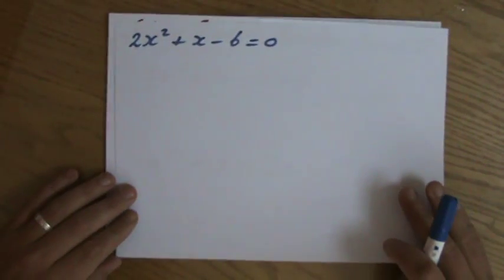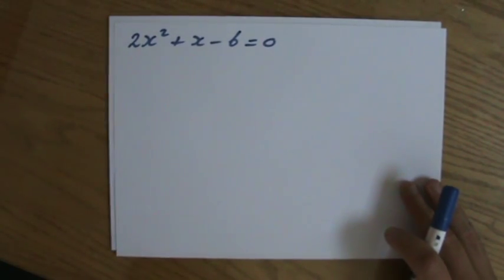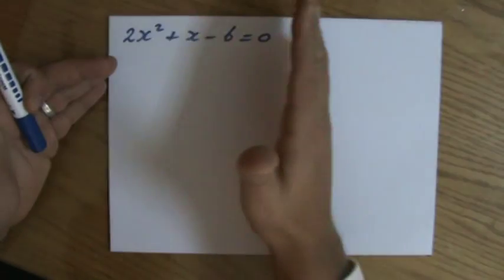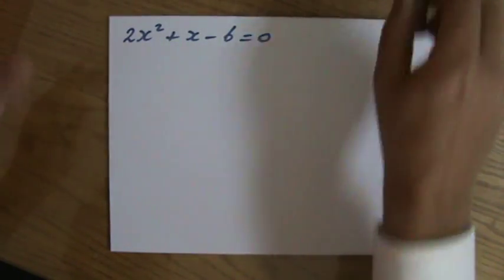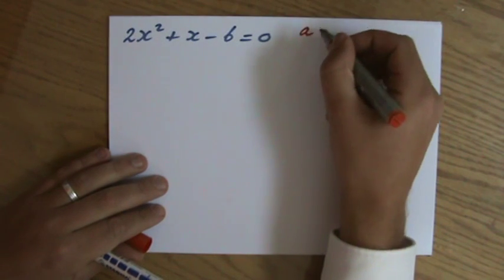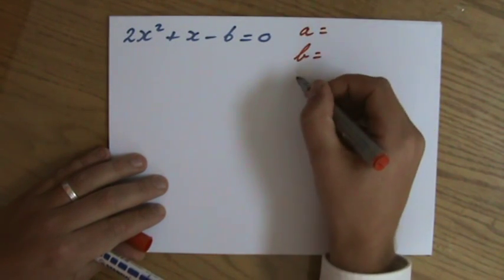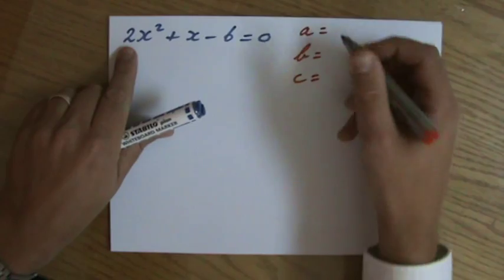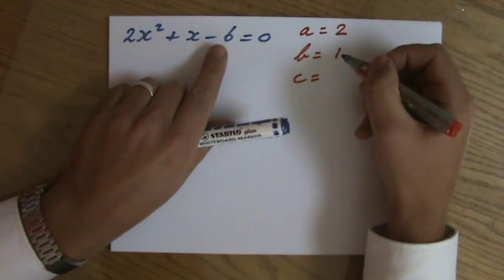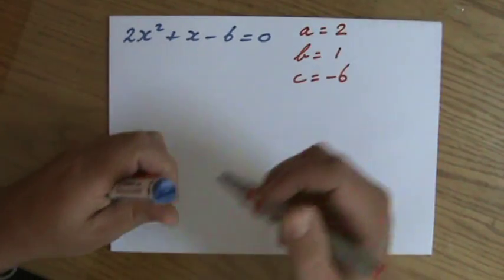Okay, the first one, 2x² + x - 6 = 0. It's already in the correct order, I always check that. ax² + bx + c = 0, so what is a, what is b, and what is c? Well, a is 2, b is 1, and c is -6. Fantastic.